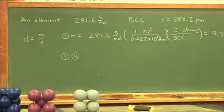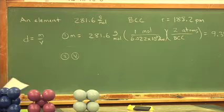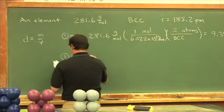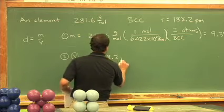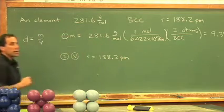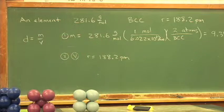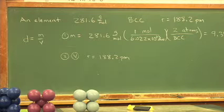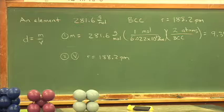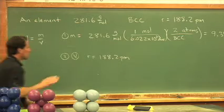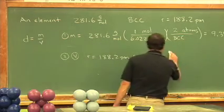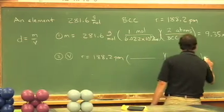Well, we are given that the radius is equal to 188.2 picometers. And before I do anything, I would like to change picometers into centimeters. We're going to end up with grams per centimeters cubed. Change it into centimeters now. Worry about the units now and get that over with. I'm going to show all my work and show two unit conversions,